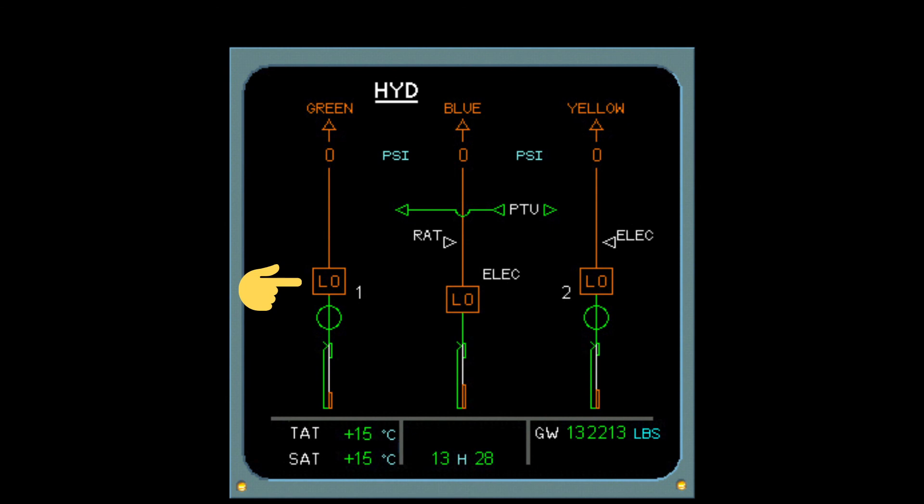In the blue system, you can see the main electrical pump as well as the emergency RAT. The RAT position is disconnected as the white arrow is not connected to the line. The green system displays the main engine 2 pump and the electrical pump.